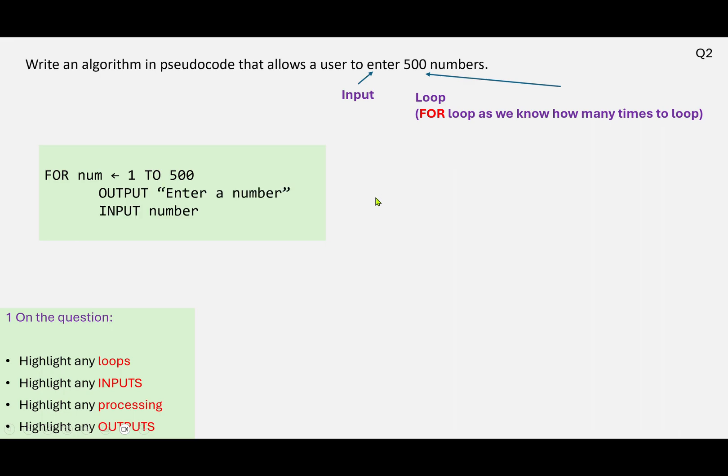So we then need to input a number inside the loop. So again, we're going to use INPUT to store whatever the person has typed in, and assign it to that variable number, and we'll output a helpful message so they know what they're doing.